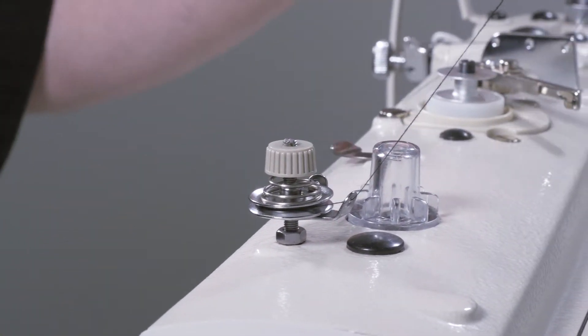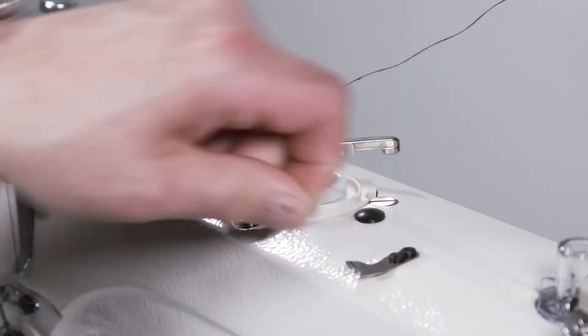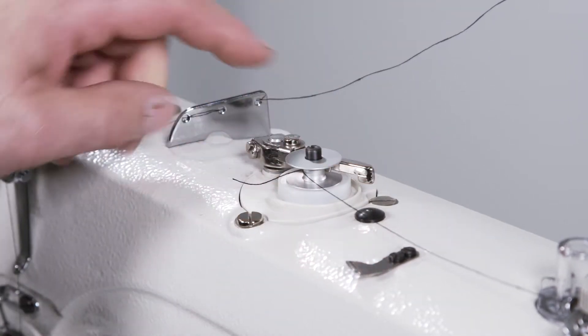Wrap the thread around the bobbin from left to right in a clockwise motion. Bring in the regulating finger.